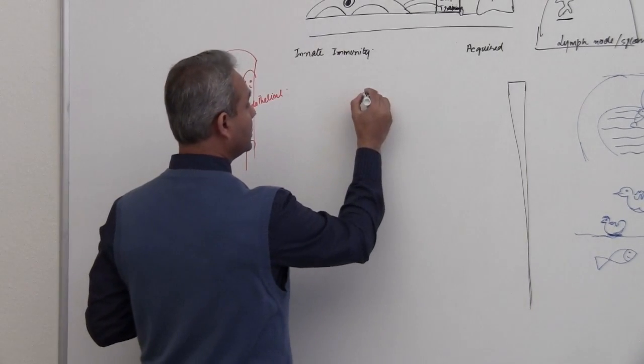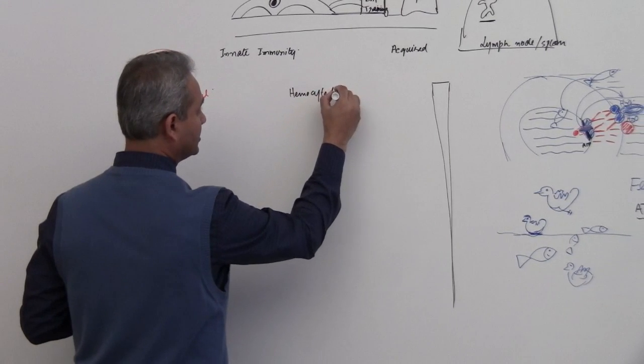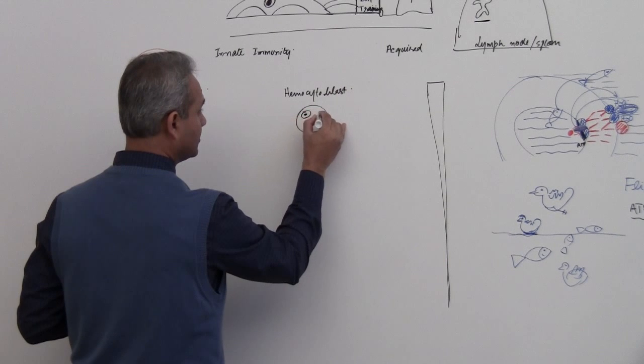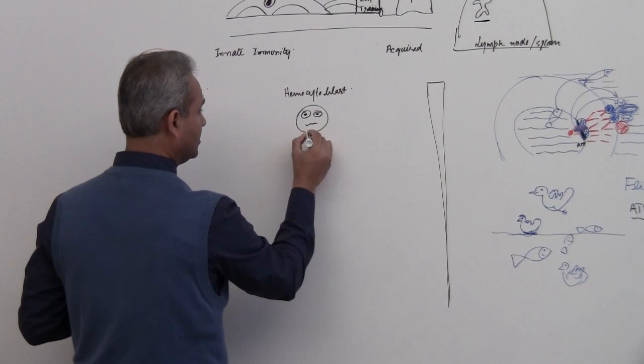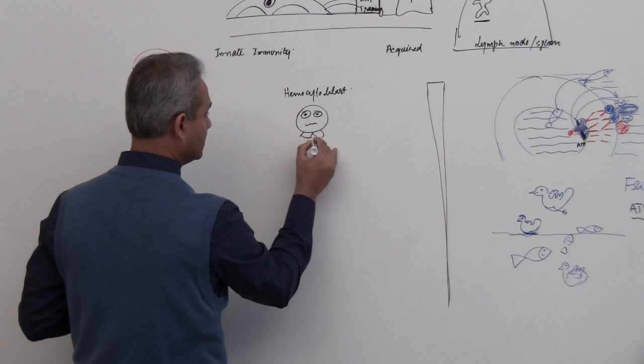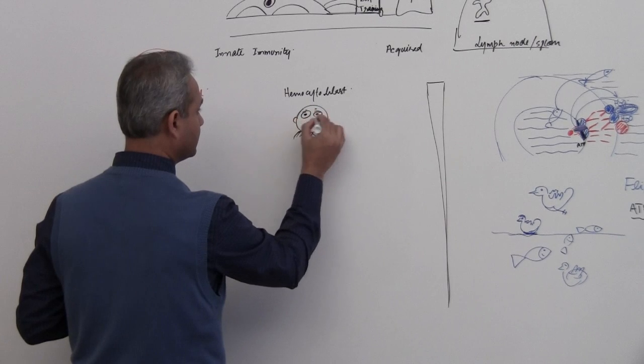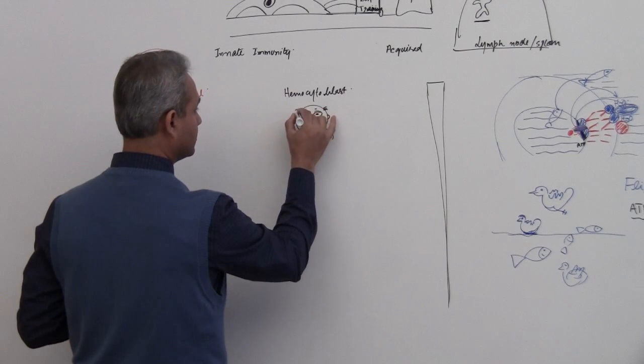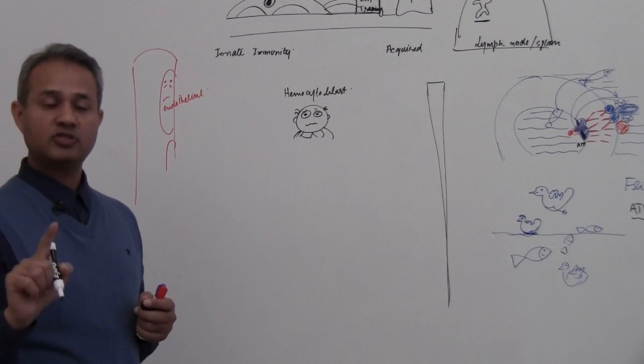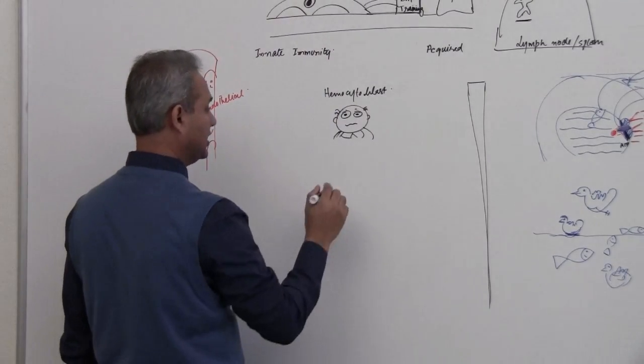So we have the hemocytoblast. This cell here—you see, he looks very serious. This is the hemocytoblast. The hemocytoblast is going to make all blood cells. That is our primary bone marrow cell.